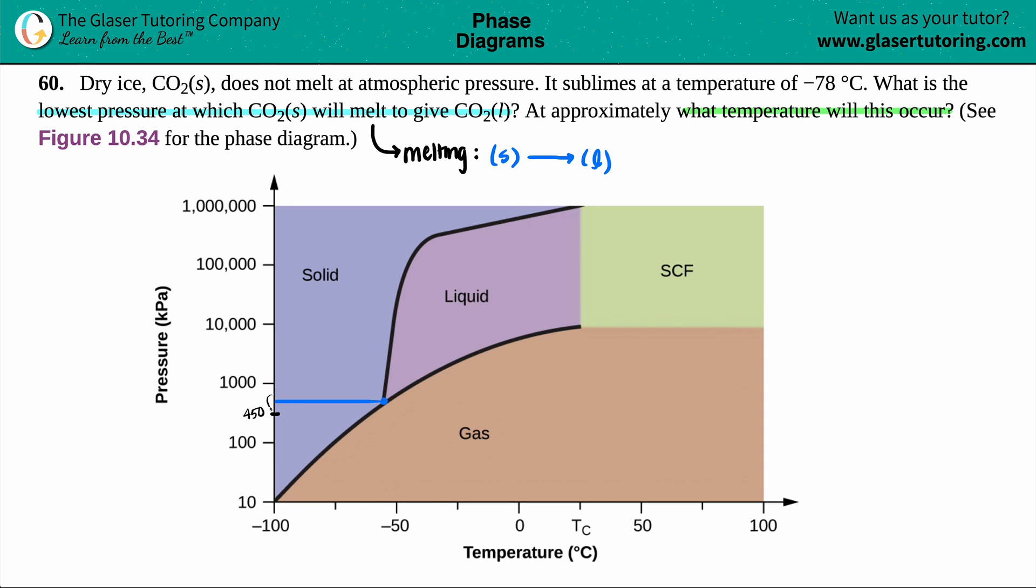This line is a little bit above 450, maybe 500 or 550. Let's say 500 kPa. So the lowest pressure would be roughly 500 kilopascals.